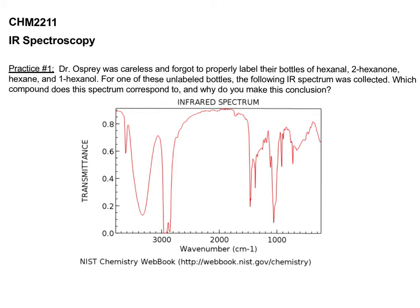The first thing we have to think about is what are the structures of the compounds we're looking at? What functional groups are present there? And how can we use this IR spectrum to match with the functional groups present in one of those bottles?